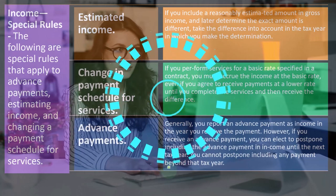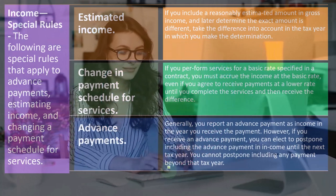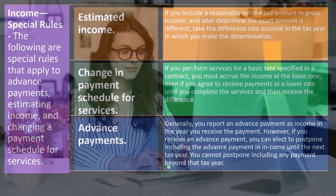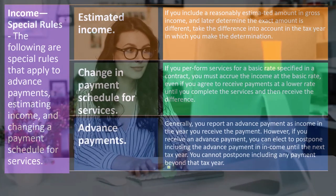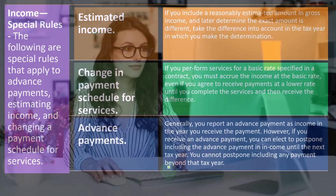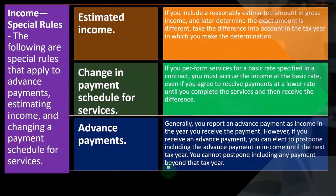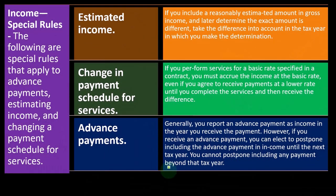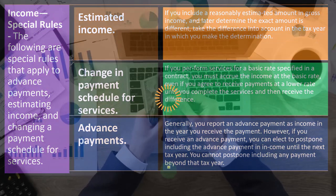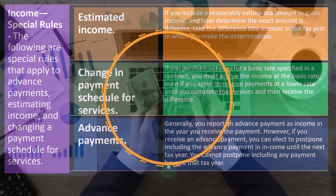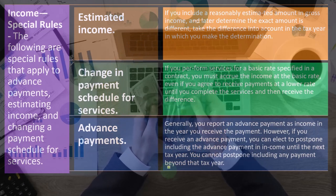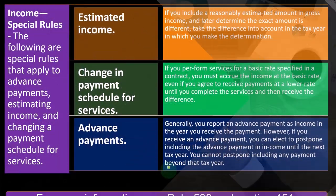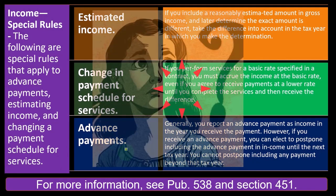In that case, you wouldn't actually record the revenue on an accrual-based system until you did the work. But the IRS is saying you've got the money, and they want their piece of it when you get it. However, if you receive an advance payment, you can elect to postpone including the advance payment in income until the next year, but you cannot postpone including any payment beyond that tax year. For more information, see Publication 538 and Section 451.